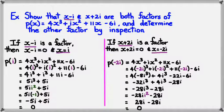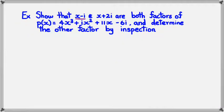So as you can see, both of these, x minus i and x plus 2i, are both factors of p of x. Now, I want to figure out the other factor. And to do this, I'm actually going to do this in the next slide, just because I'm out of space here. All right, moving on to the next slide. So here we go. Don't worry, guys. It's still the same question. I'm just doing the other factor by inspection.